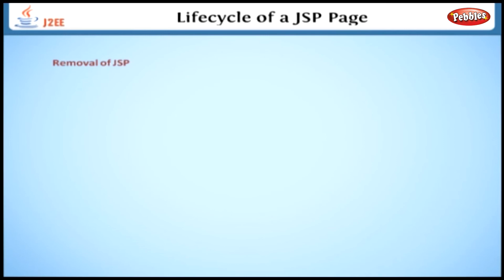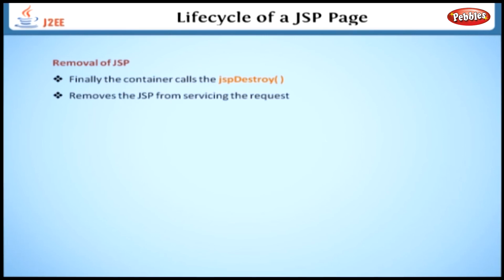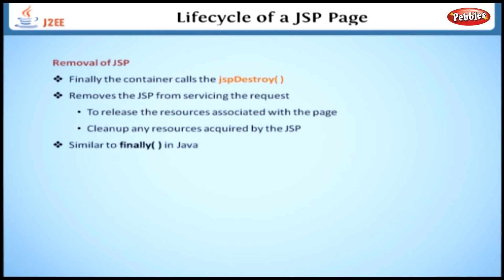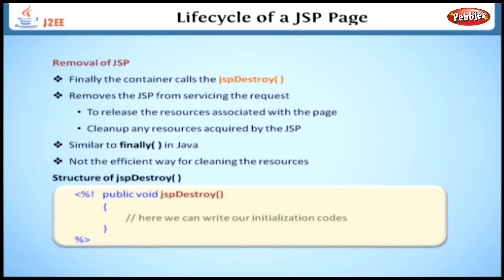The final process in our lifecycle is the removal of the JSP page. Finally, the container calls the jspDestroy method, which removes the JSP from servicing the request. If we want to release the resources associated with the page or clean up any resources required by the JSP, we define them inside this method. This method is like a final method in Java and we aren't sure when it will run, so this is not the most efficient way for cleaning resources. Up until now, we have discussed the execution of JSP pages and the methods involved in the lifecycle of JSP.